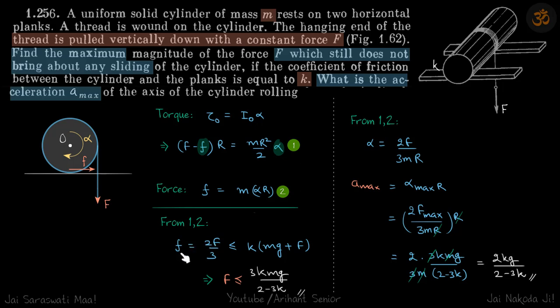So we will get f = 2F/3. We know friction cannot exceed μN. The value of N will be mg + F—that's the force balance in the y direction. mg is downwards, N is upwards, so mg + F = N.